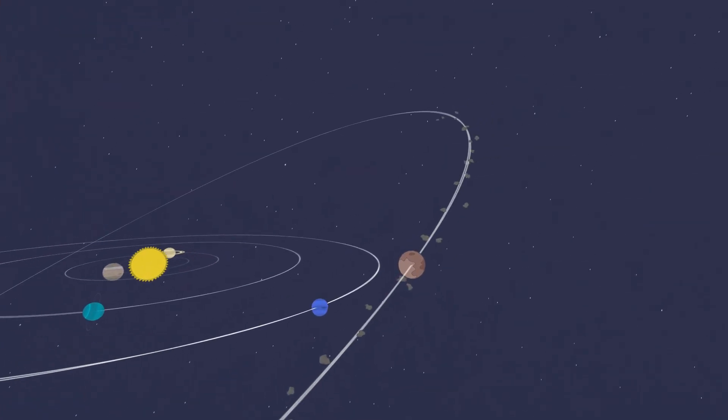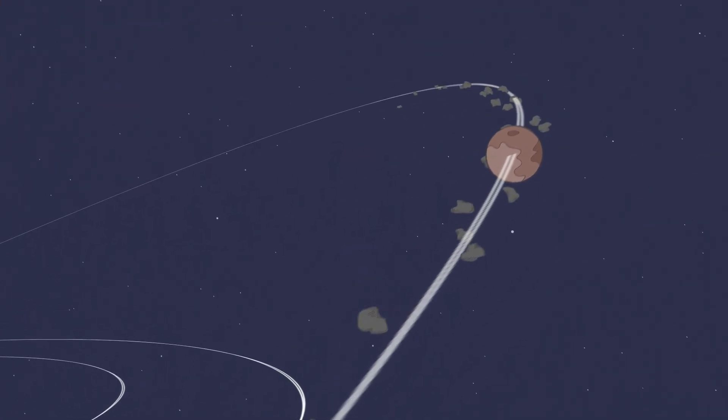A dwarf planet could be in for a bumpy ride as it travels. Its path is full of other objects like asteroids.